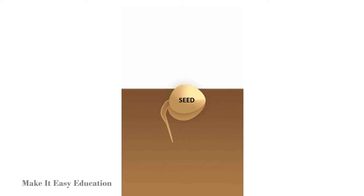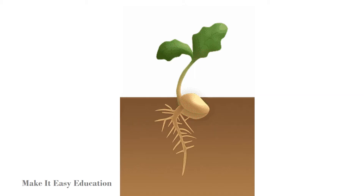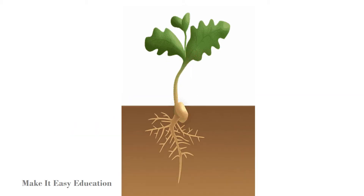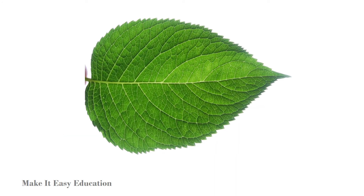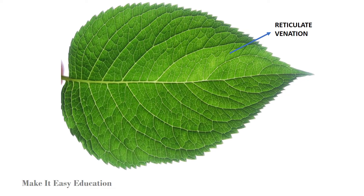Taproots develop from the radicle of a seed, forming the primary root. It branches off to secondary roots, which in turn branch to form tertiary roots. These may further branch to form rootlets. Plants with taproot have leaves with reticulate venation.